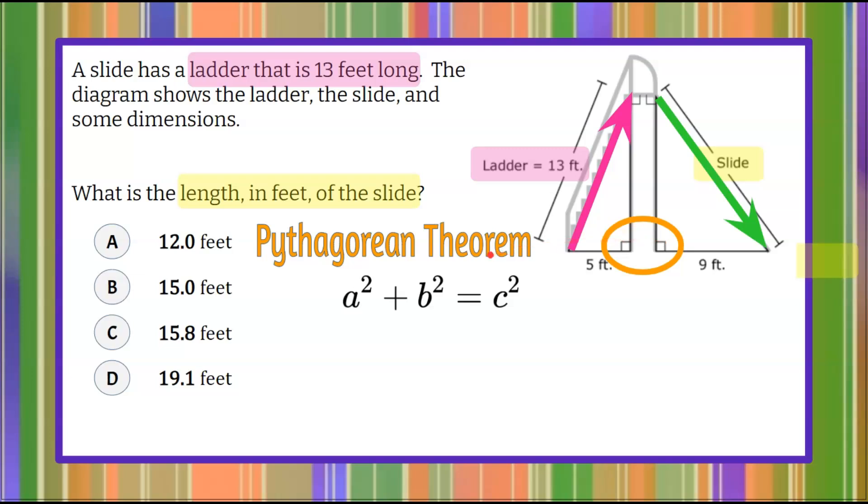So we're going to use the Pythagorean Theorem to help identify some missing lengths. The Pythagorean Theorem states a squared plus b squared equals c squared. a and b represent the legs of any right triangle that form the right angle. c is always the longest side of the triangle opposite the right angle, and we call that the hypotenuse.